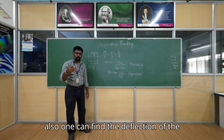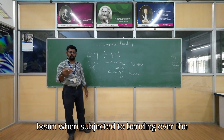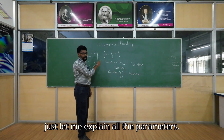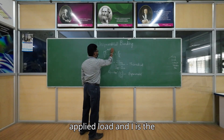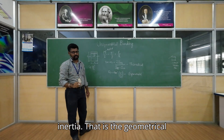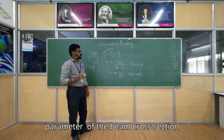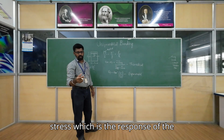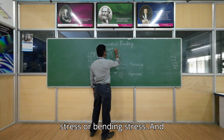One can also find the deflection of the beam when subjected to a bending moment or transverse loads. In the formula, M is the applied bending moment, I is the second moment of area (moment of inertia) — a geometrical parameter of the beam cross section — and sigma is the bending stress, which is the response to the applied load.